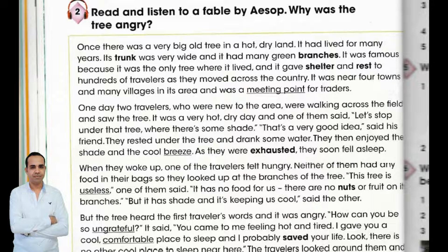Unit 9, Lesson 2, Page 46, Exercise 2. Read and listen to a fable by Aesop. Why was the tree angry?